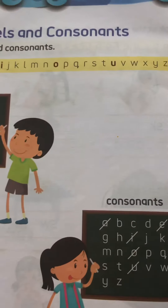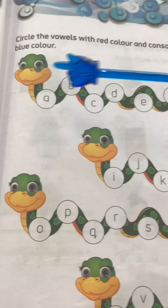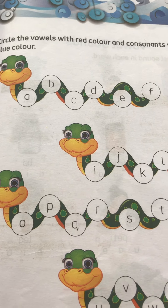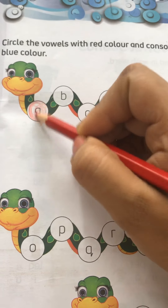Here is an activity for you: circle the vowels with red color and the consonants with blue color. So we have to circle the vowels with red. As we know, the vowels are A, E, I, O, U.